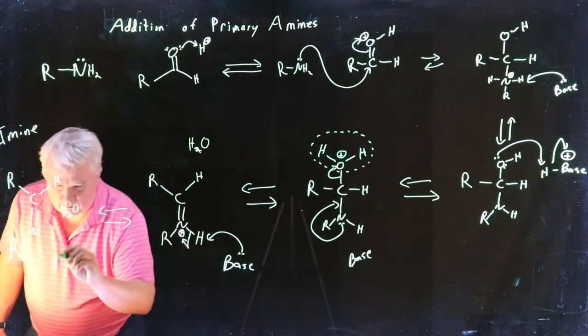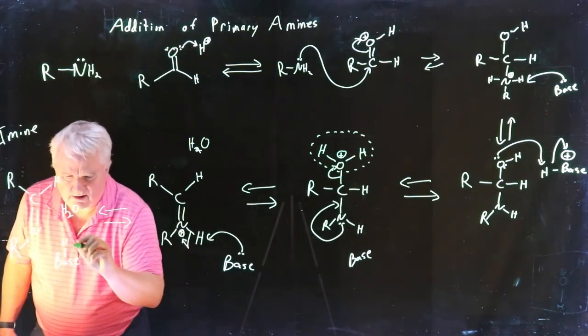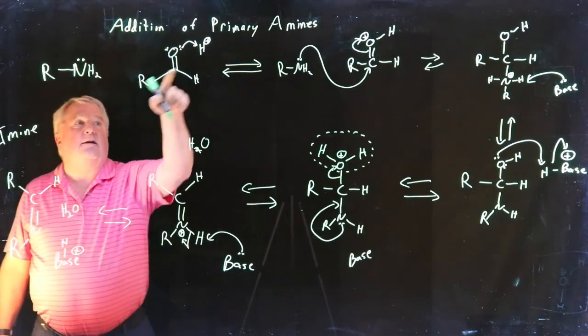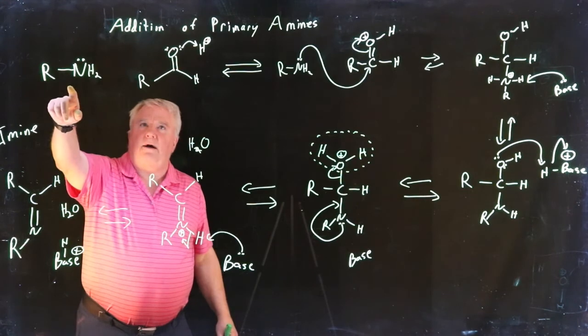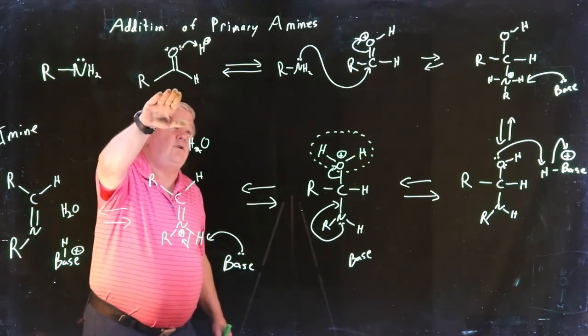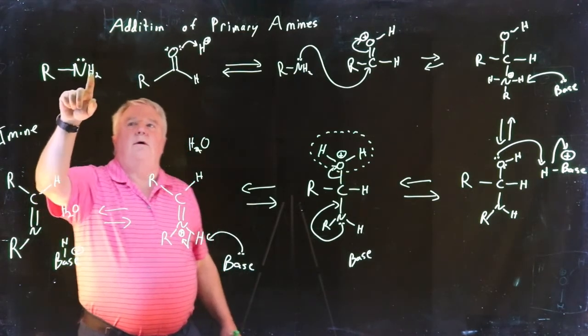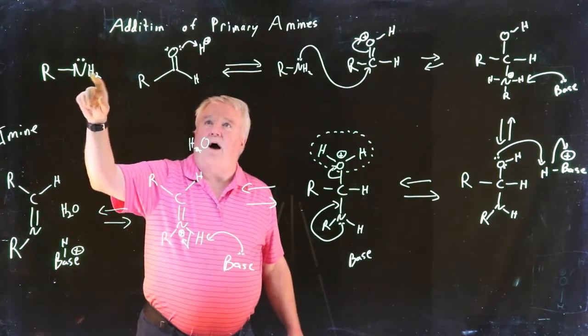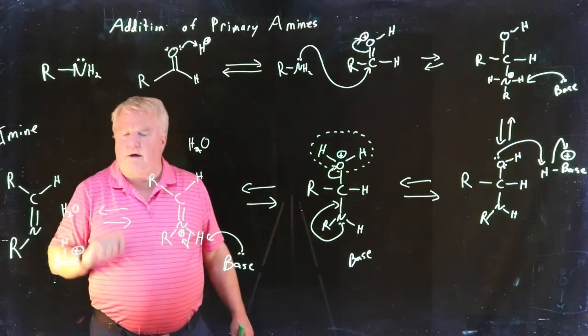And we've reformed the acid that we started at the beginning. So, a primary amine reacting with a carbonyl compound, like an aldehyde or a ketone, will lose two atoms of hydrogen. They'll combine with the oxygen. And we get our imine and a molecule of water.